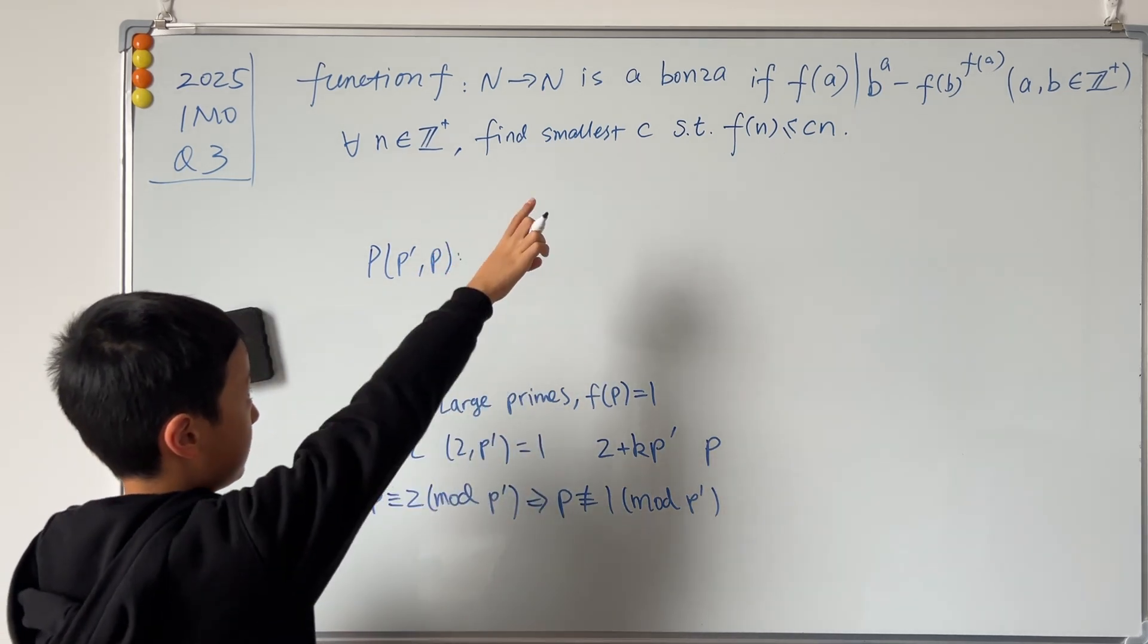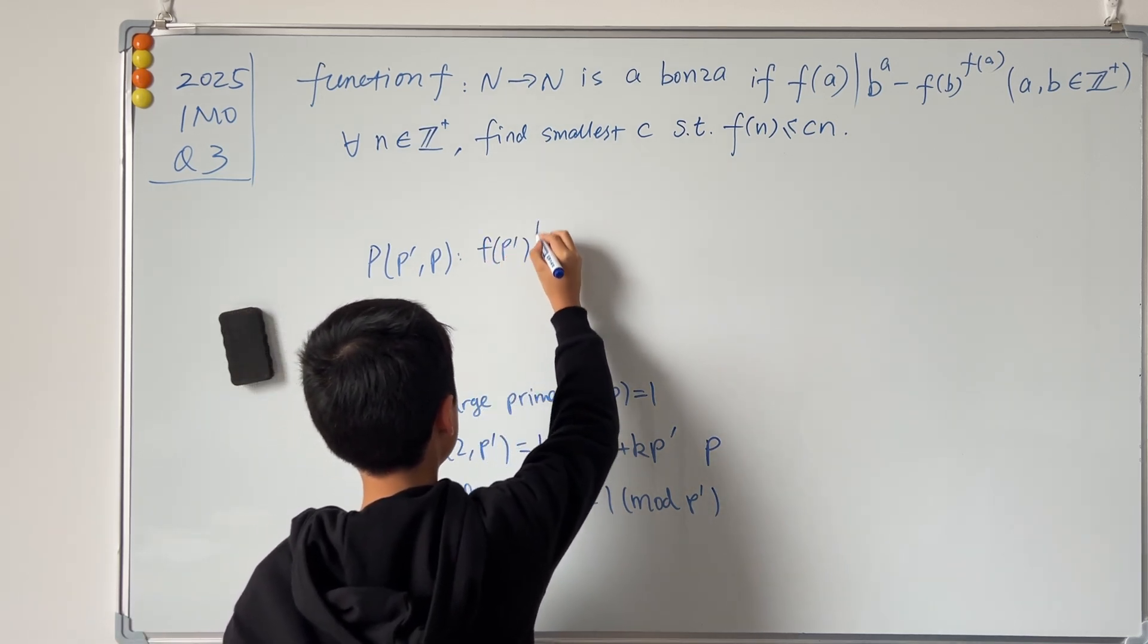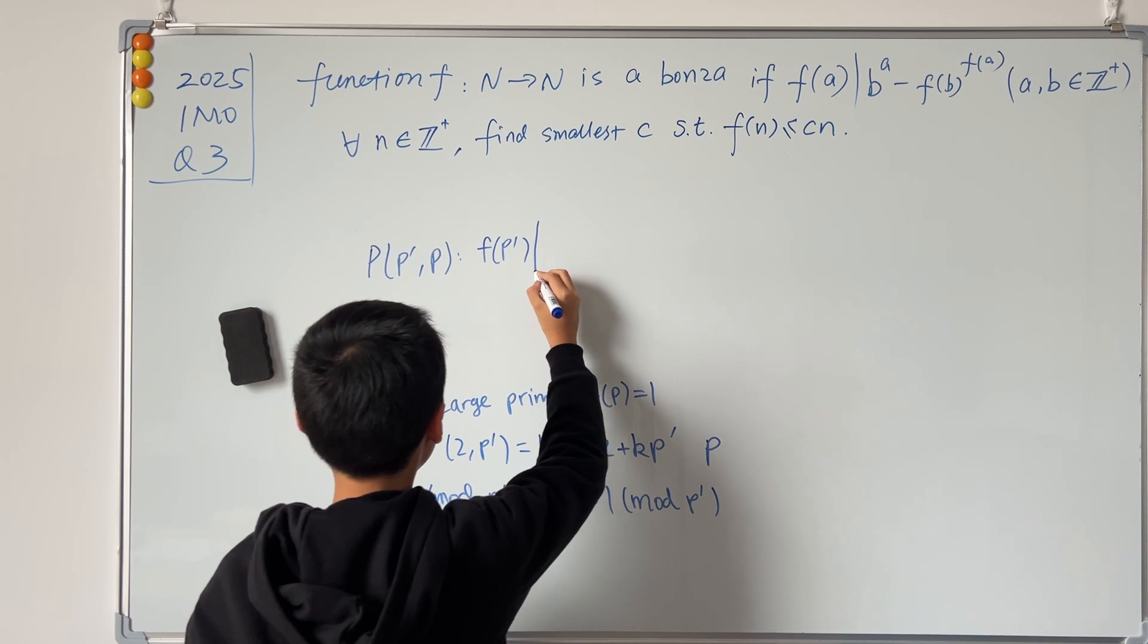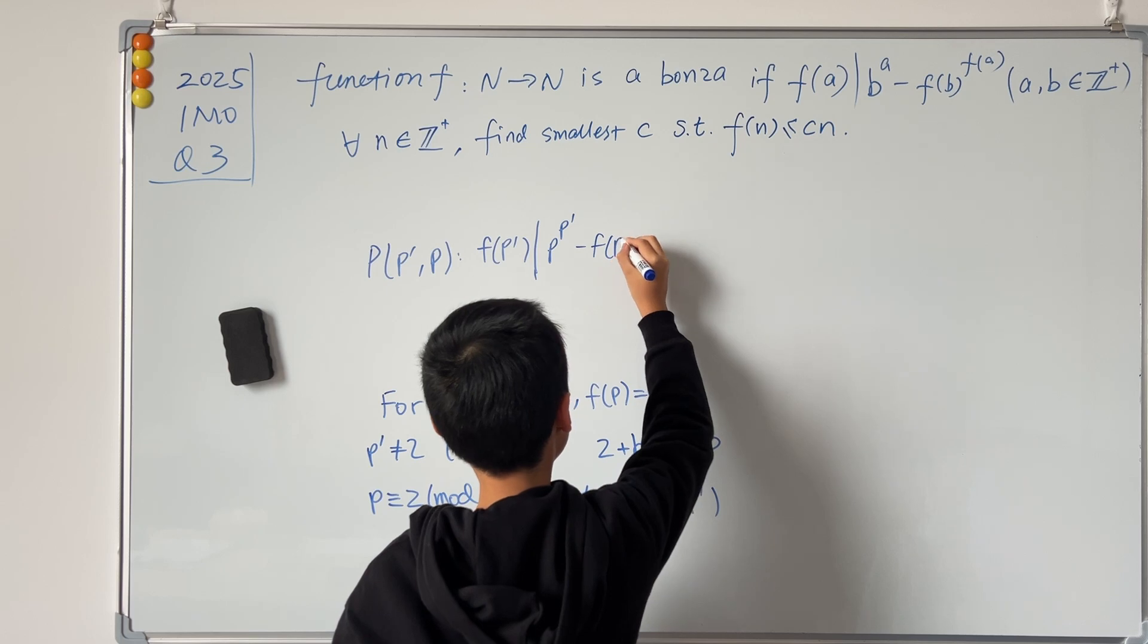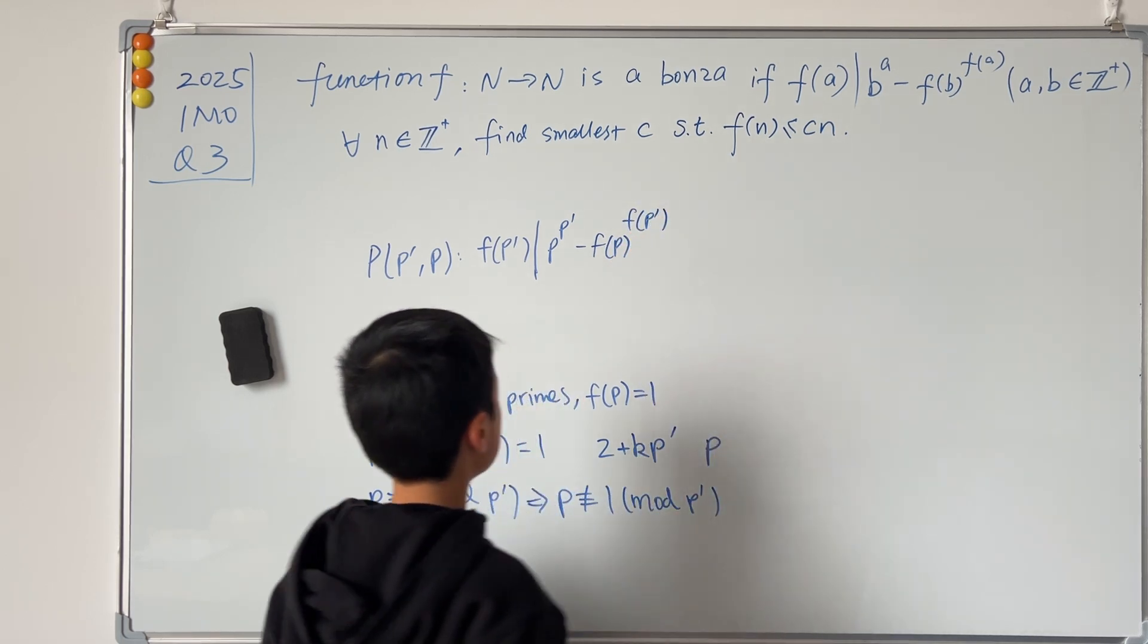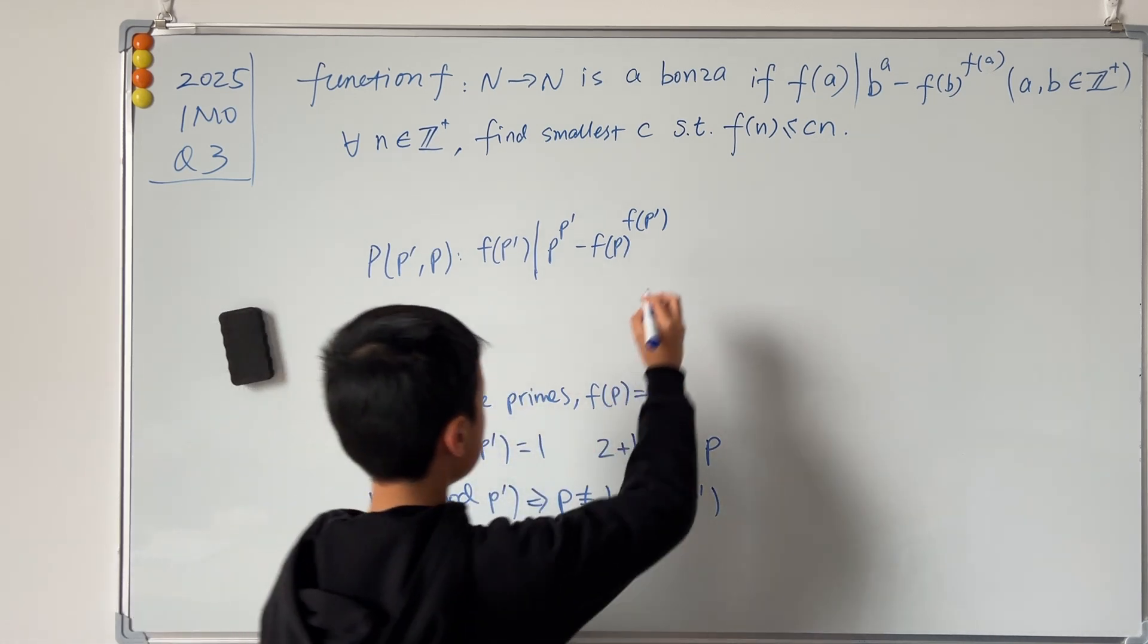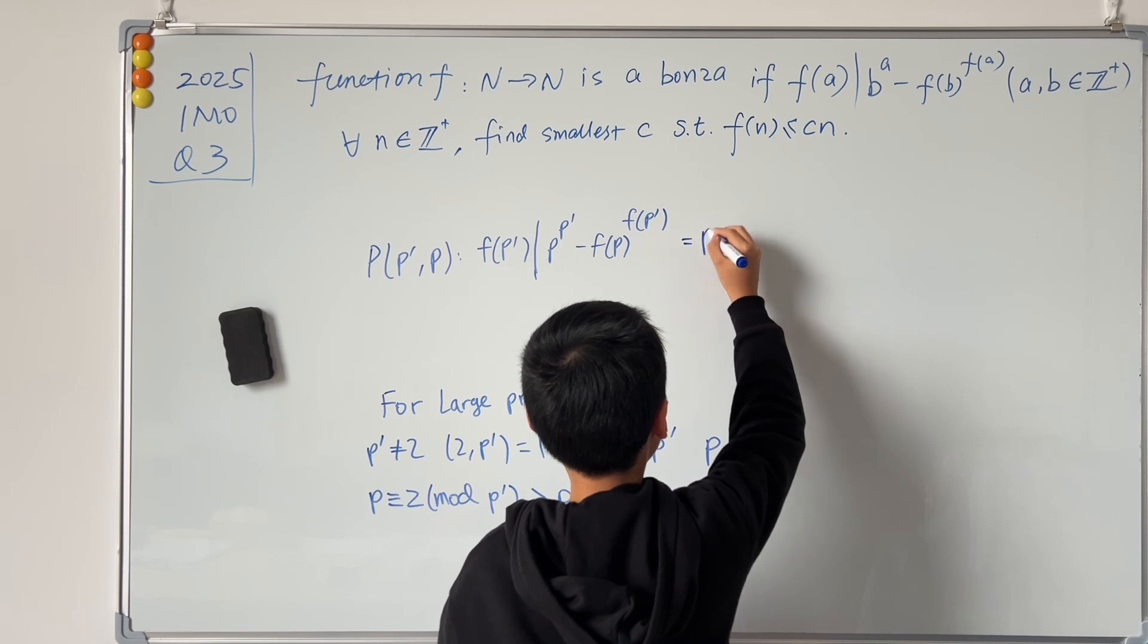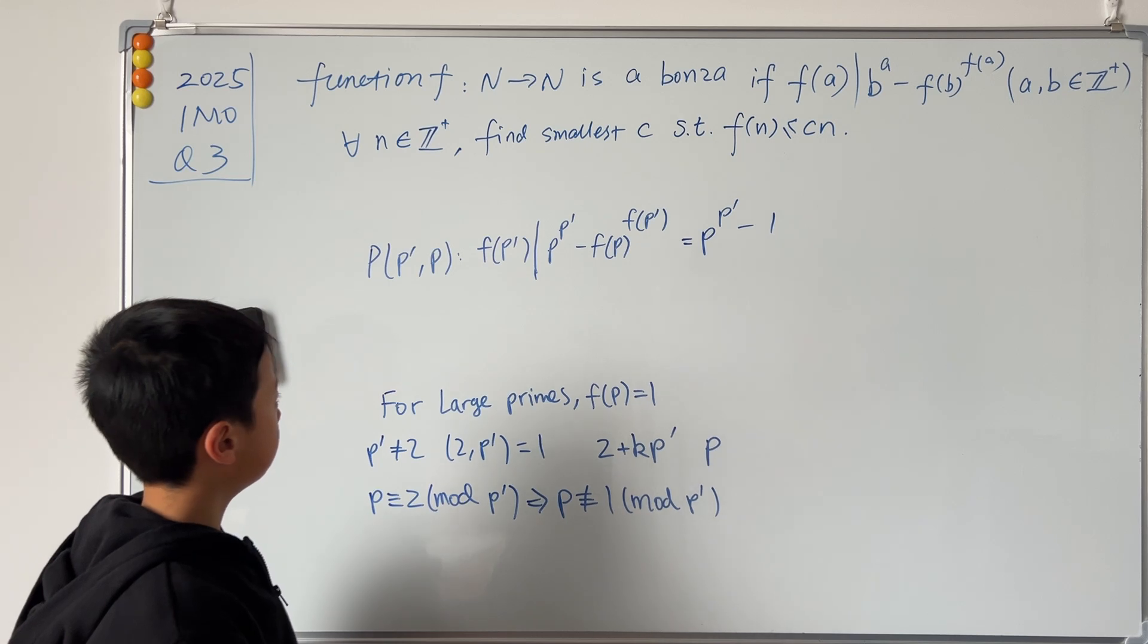And this will be using that f(p') divides p^(p') - f(p)^(f(p')). And we know that f(p) = 1, so this is just equal to p^(p') - 1.